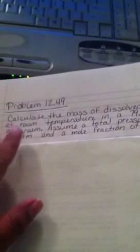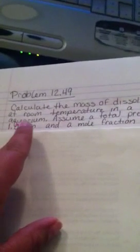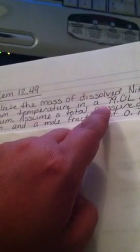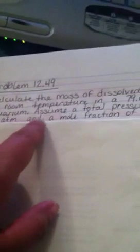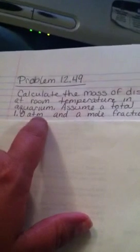Anyway, it's something to the effect of calculate the mass of dissolved nitrogen at room temperature in a 79.0 liter home aquarium. Assume a total pressure of 1 atmosphere and a mole fraction of 0.78. And that's unitless.